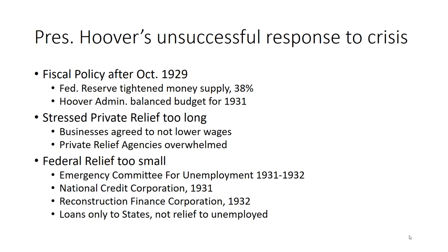In his defense, economic theories that explained the depression and how government spending could stop it — the theories of John Maynard Keynes — didn't exist until the 1930s and 1940s, a response to the depression and World War II. Hoover's fiscal policy of belt-tightening made things worse. The Federal Reserve tightened the money supply by over one-third when expanding the money supply might have helped, and Hoover thought balancing the budget would put money back into the economy, but it merely starved the Federal Government. Hoover stressed private relief too long, controlled businesses to avoid layoffs and lowering wages, but they could not hold, and private charity was soon overwhelmed.